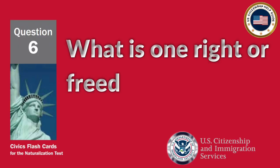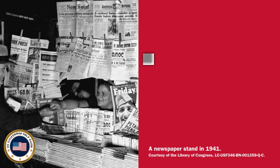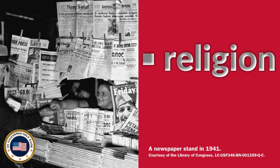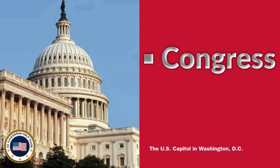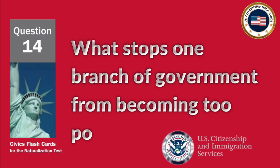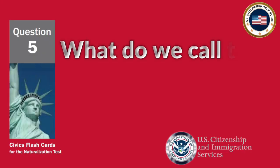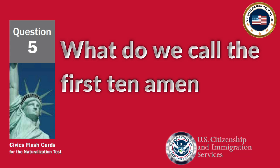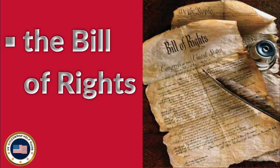What is one right or freedom from the First Amendment? Religion. Who makes federal laws? Congress. What stops one branch of government from becoming too powerful? Separation of powers. What do we call the First Ten Amendments to the Constitution? The Bill of Rights.